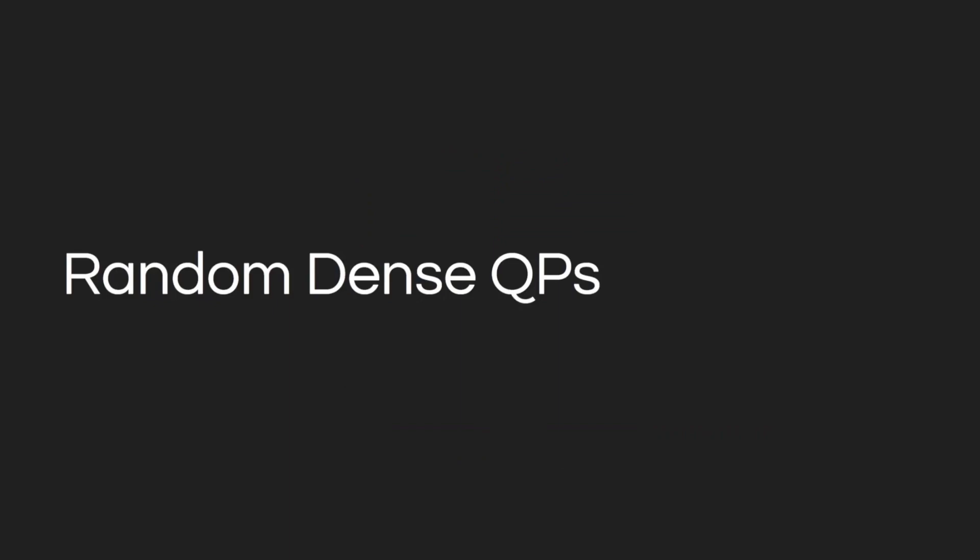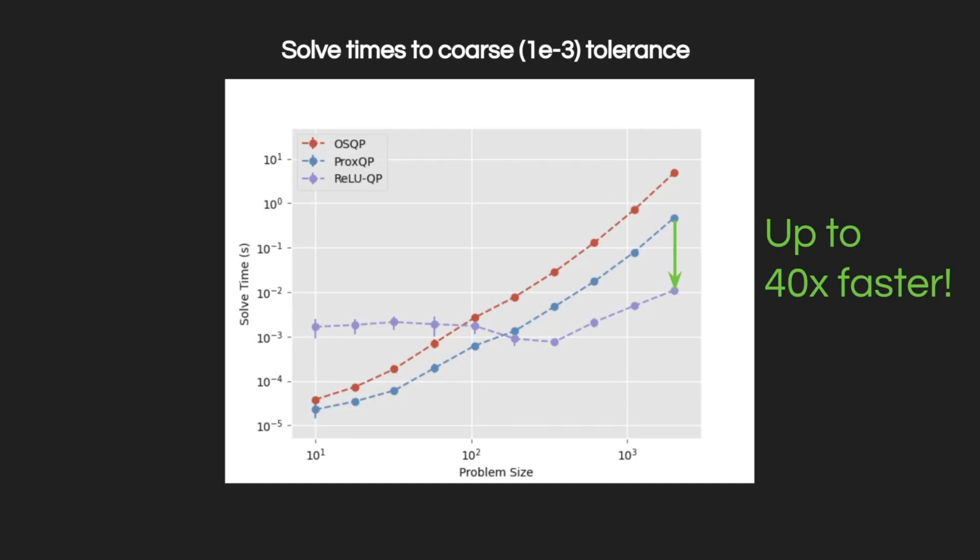To test this, we benchmarked RELUQP on random dense QPs with inequality and equality constraints. When solving to coarse tolerances, RELUQP achieved up to 40 times faster solves over two state-of-the-art CPU-based methods, OSQP and ProxQP.